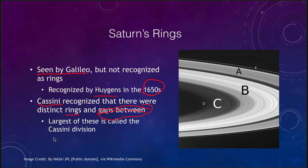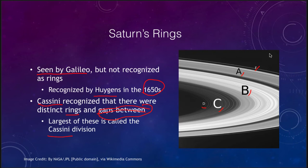The largest gap is now named the Cassini division in his honor. We see the A, B, C, D, and F rings. The primary ones visible are the A, B, and C rings. The D ring is a lot fainter and harder to see. The F ring is a very thin ring out beyond the A ring and also a little bit harder to see.